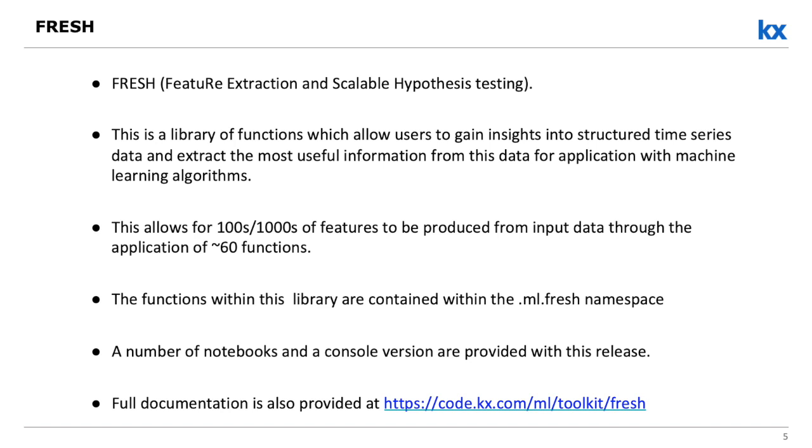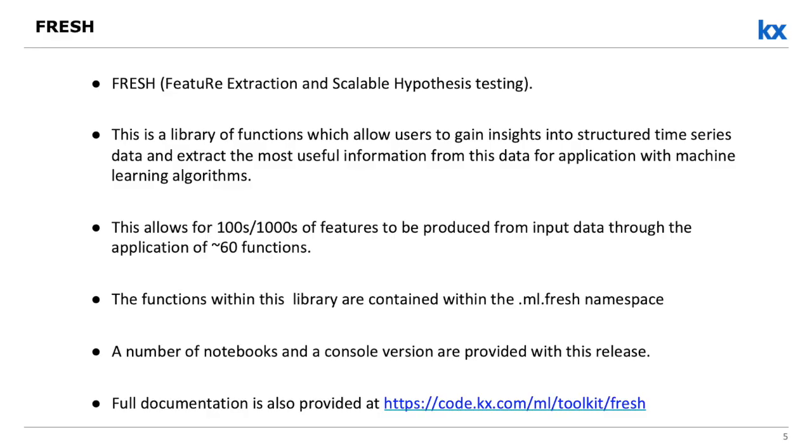So what's FRESH? FRESH is Feature Extraction and Scalable Hypothesis Testing. Basically it's a library of functions that lets you gain insights into your structured data. Based on what's called an ID column — which could be your date, something with a unique character to it — if you're talking about financial data, you might try to gain insights based on the date or a specific hour. It applies these functions to your data and concatenates it down, allowing hundreds to thousands of features to be produced. It's all wrapped in essentially two functions: one that does the feature extraction and one that does the feature selection.